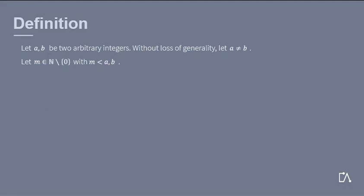Let's have a look at the mathematical definition. Let a and b be two arbitrary integers which are not equal. Further, let m be a natural non-zero number, which is smaller than a and b.